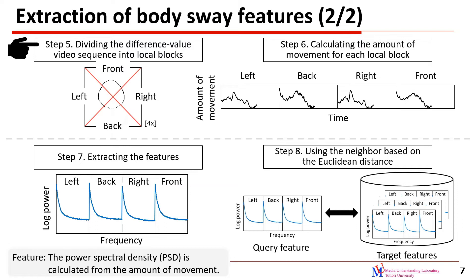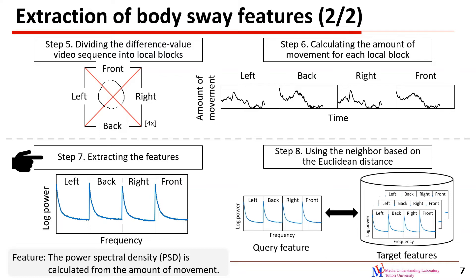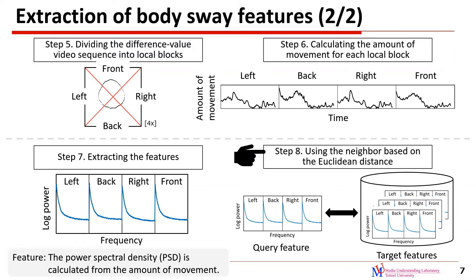In step 5, we divide the difference-value video sequence into local blocks to observe the spatial difference in head shape. In step 6, we compute the amount of movement for each local block to extract a time series signal in the head region. In step 7, we extract a feature for person identification. In each local block, the power spectral density is calculated from the amount of movement. In step 8, we use the nearest neighbor based on the Euclidean distance between a query feature and the target features.